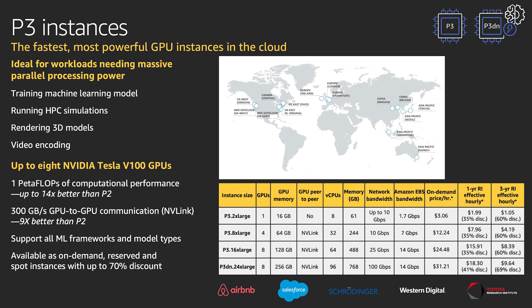P3 comes in sizes that include one, four, or eight NVIDIA Tesla V100 GPUs for up to one petaflop of compute performance in a single instance.